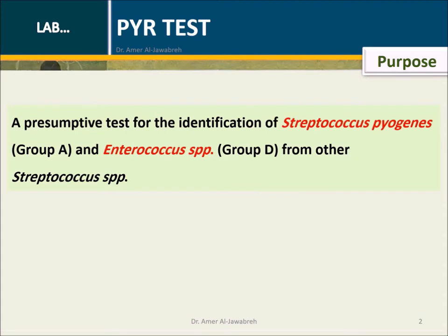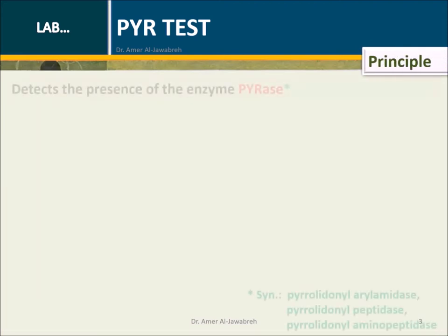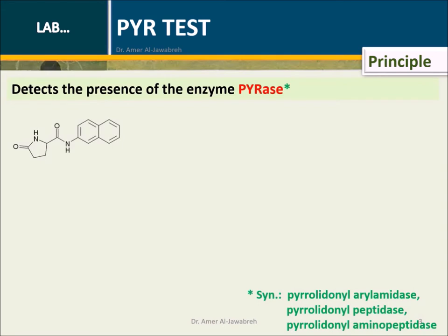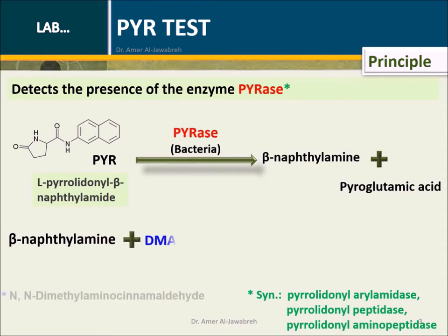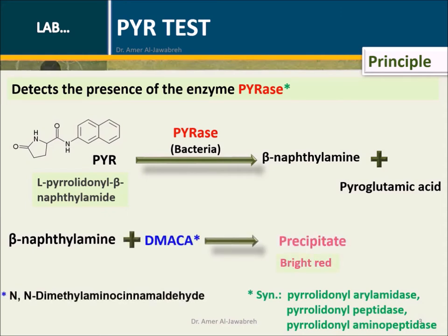Principle: Detects the presence of the enzyme pyrease, also known as pyrrolidonyl arylamidase or pyrrolidonyl aminopeptidase. Pyrrolidonyl beta-naphthylamide is broken down by the enzyme pyrease into beta-naphthylamine and pyroglutamic acid. Beta-naphthylamine in the presence of DMACA (dimethylaminocinnamaldehyde) forms a bright red precipitate.